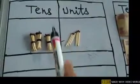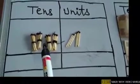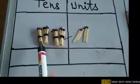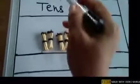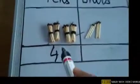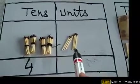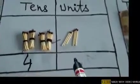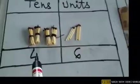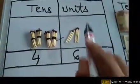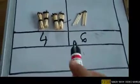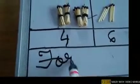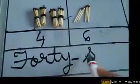Let's start. Can you see the 10s column? How many groups of sticks are there? Count with me: 1, 2, 3, and 4 — four groups of sticks, that means 4 tens. Then how many single sticks in the units column? Count with me: 1, 2, 3, 4, 5, and 6 — so 6 single sticks. The number is 46 — 4 tens and 6 units. The number name is forty-six.